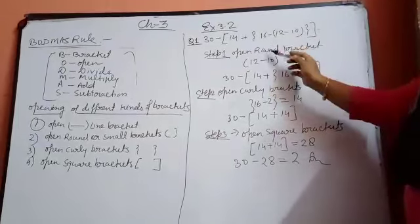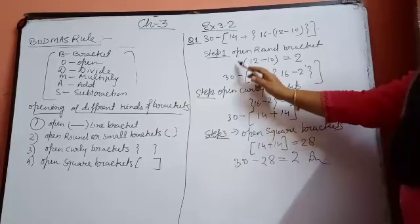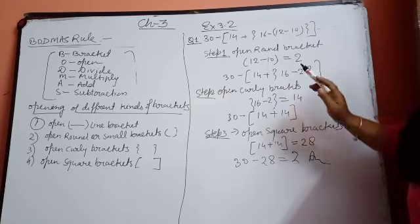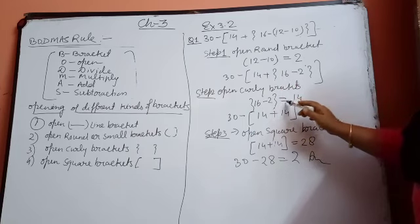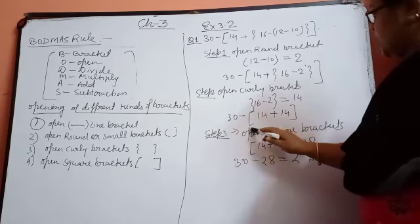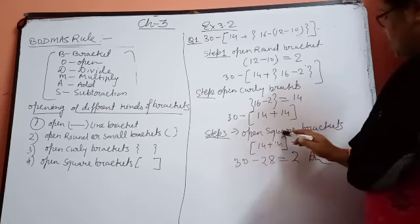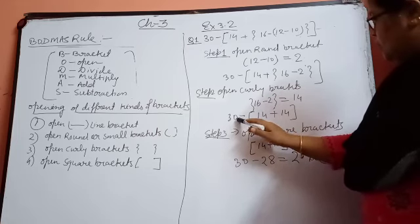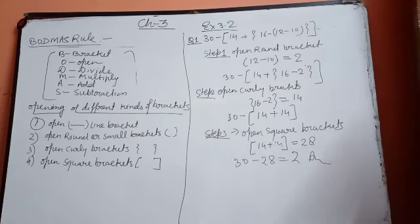Again I am repeating. First step: open round bracket — 12 minus 10 was there, so it becomes 2. Question becomes: 30 minus 14 plus 16 minus 2. Second step: open curly bracket — 16 minus 2 means 14. Question becomes: 30 minus square bracket 14 plus 14. Step 3: open square brackets — 14 plus 14 equals 28. Finally: 30 minus 28, subtraction gives 2 — your answer.